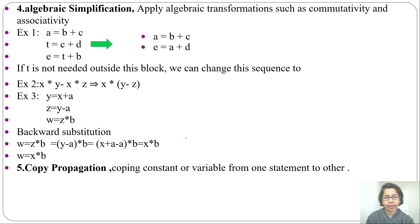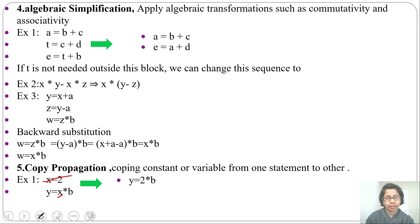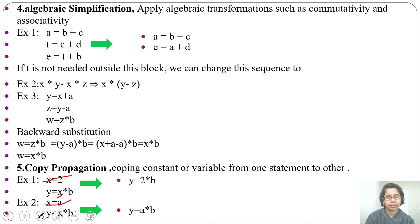Next is copy propagation: copying a constant or variable from one statement to another. For example, if x equal to 2 and y equal to x multiplication b, we can copy the value of x into the second statement and write y equal to 2 multiplication b, eliminating the first statement. Similarly, if x equal to a and y equal to x multiplication b, we can write y equal to a multiplication b and eliminate the x assignment.